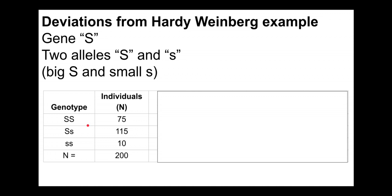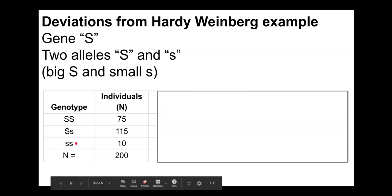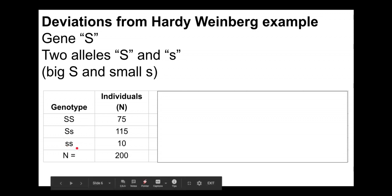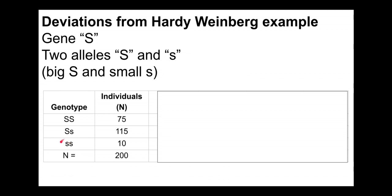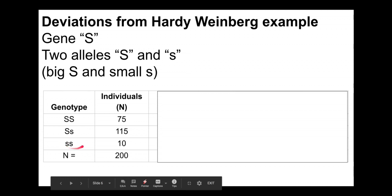Big S big S individuals — homozygous dominant — produce normal red blood cells but are susceptible to malaria. Heterozygous big S little s individuals are resistant to malaria, which is believed to be beneficial. Little s little s individuals — homozygous recessive — they get sickle cell anemia, a debilitating disease.